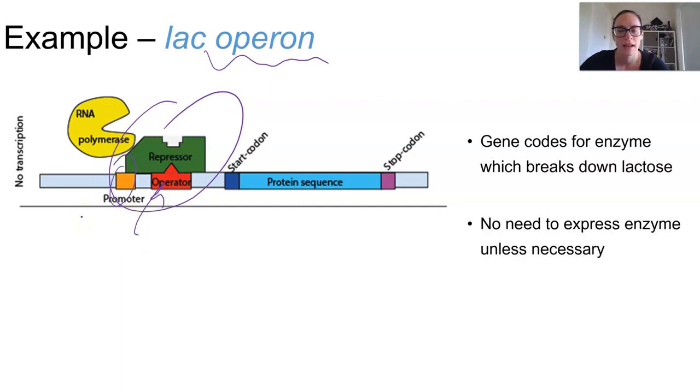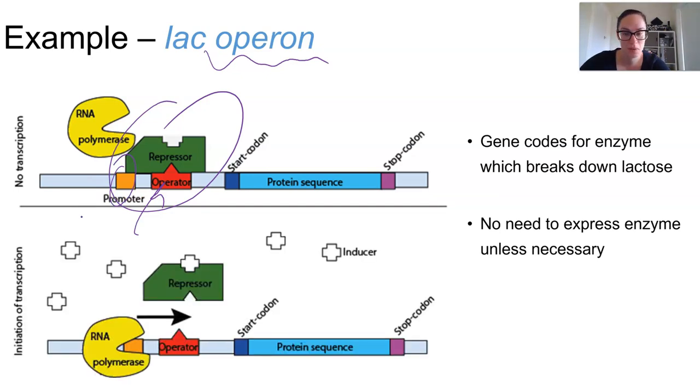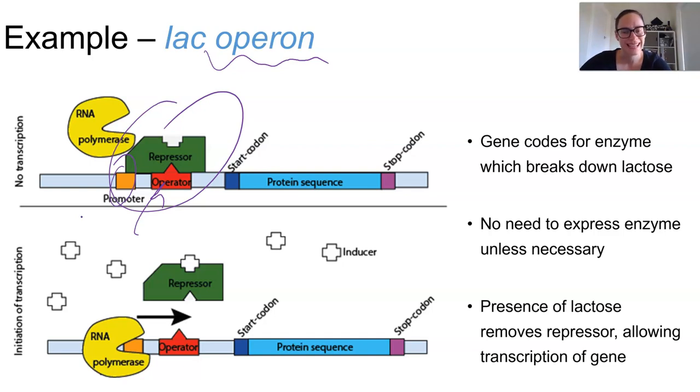Only when lactose is actually present does the lactose bind to the repressor and then it actually deactivates the transcription factor and moves it out of the way, allowing the RNA polymerase to bind and transcription to occur. Essentially the bacterium only needs those enzymes if the lactose is present, so once it is present it allows the transcription to occur by getting the repressor out of the way.